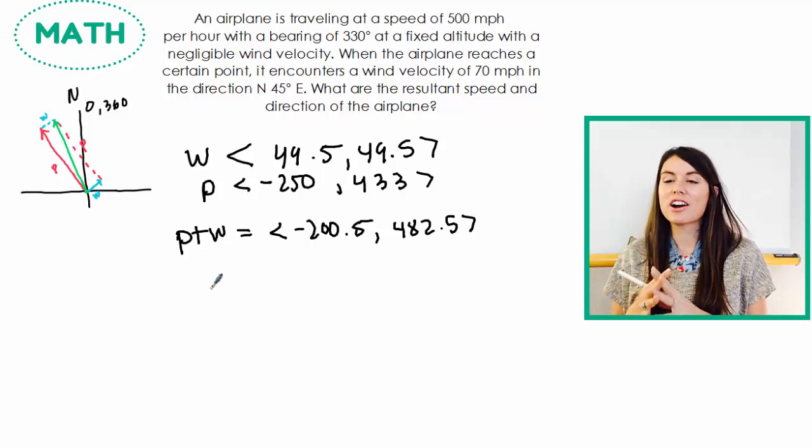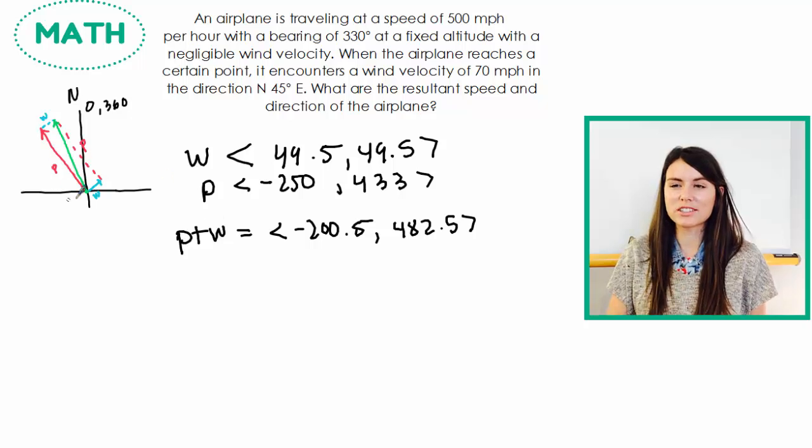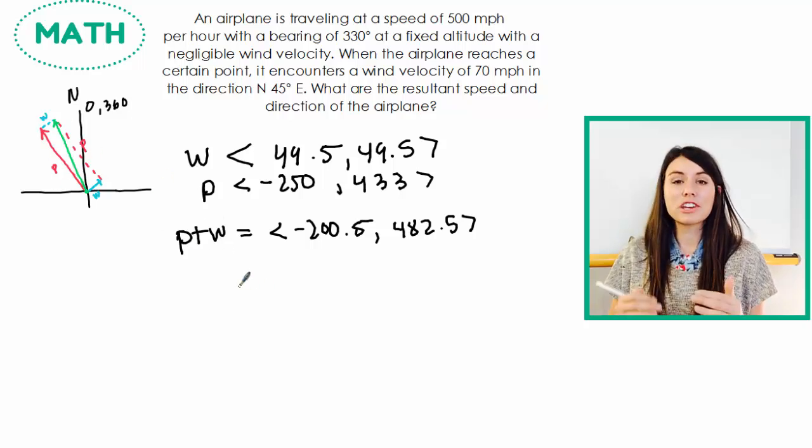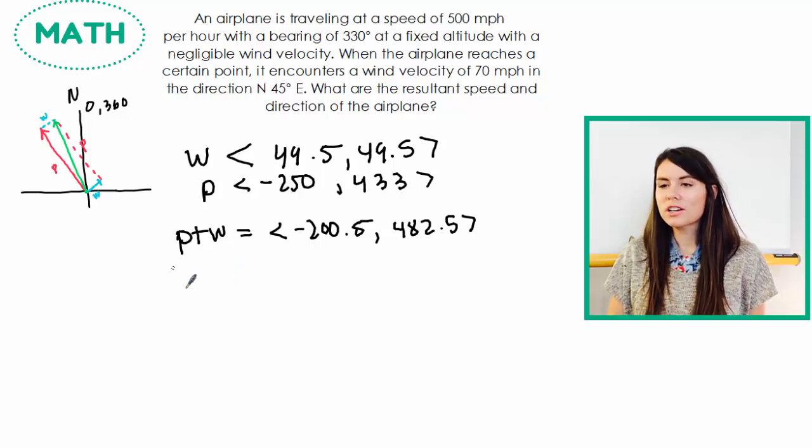So now that we have our plane plus wind vector, so our resultant vector, this green vector, if we figure out the magnitude of it, that tells us how fast it's going. So we're going to find the magnitude of this vector.